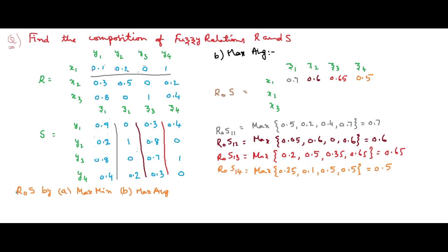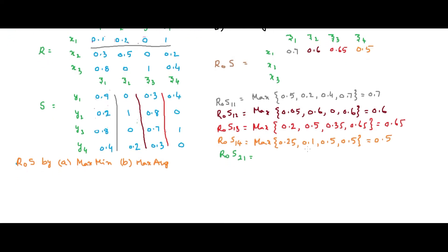Now R∘S(2,1), which is x2 and z1. Average of 0.3 and 0.9 is 0.6, average of 0.5 and 0.2 is 0.35, average of 0 and 0.8 is 0.4, and average of 0.2 and 0.4 is 0.3. The maximum of 0.6, 0.35, 0.4, and 0.3 is 0.6.